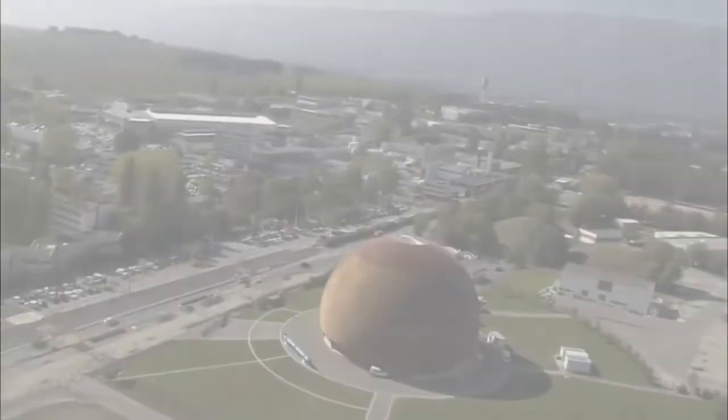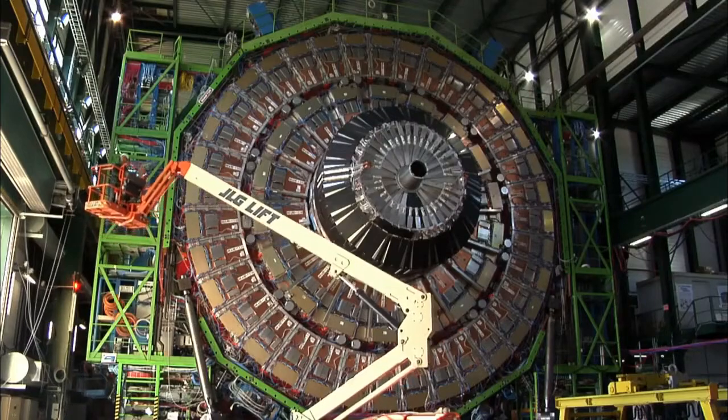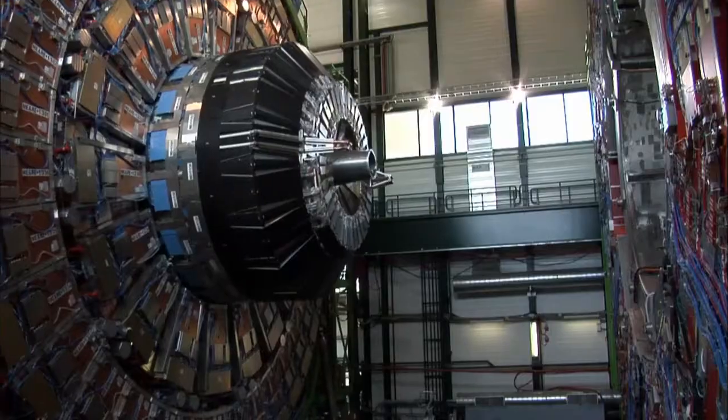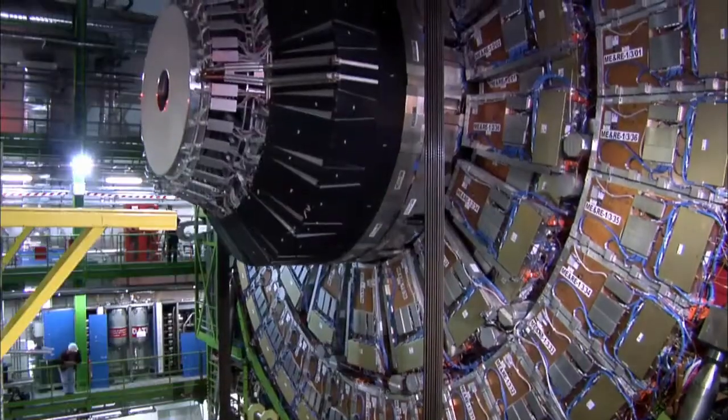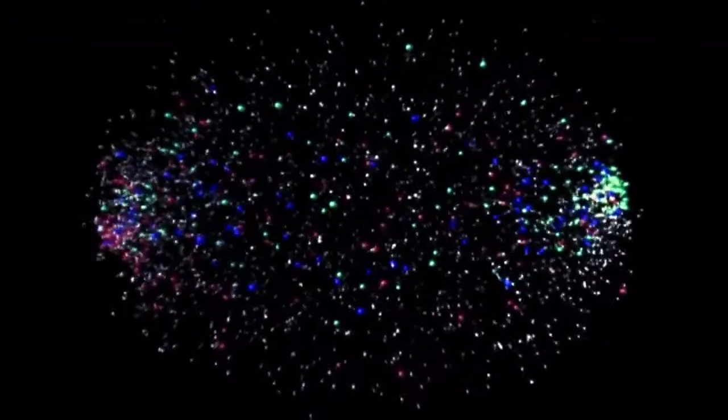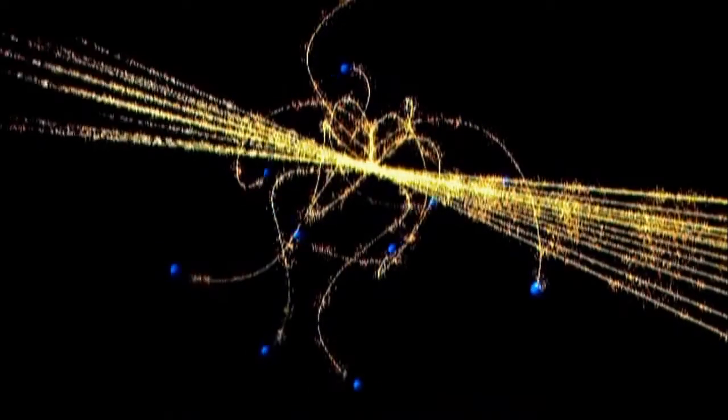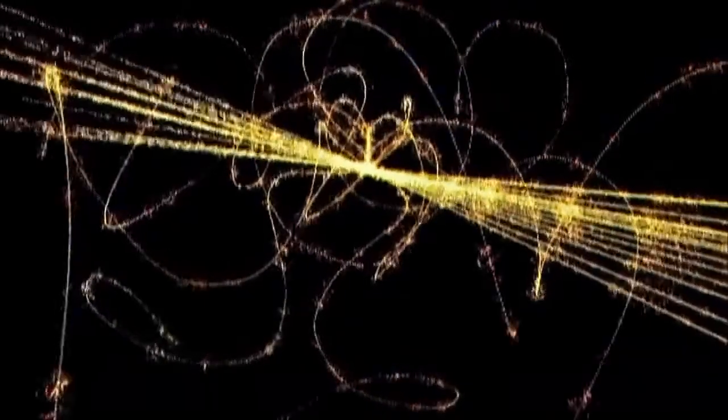And today, the quest to understand space on the smallest scale is continuing with one of the most expensive science experiments in history. This is CERN, the European Organization for Nuclear Research in Geneva. And here, buried a few hundred feet below the ground, is the Large Hadron Collider, the world's most powerful accelerator. With a price tag of about $10 billion, it accelerates subatomic particles to more than 99.99% of the speed of light and smashes them into each other. In the showers of debris produced by these collisions, scientists at places like this have discovered a whole zoo of strange and exotic particles.